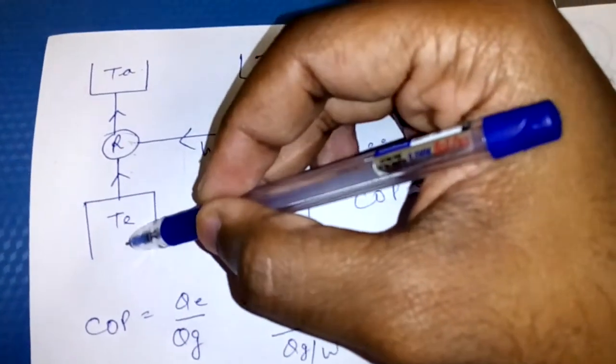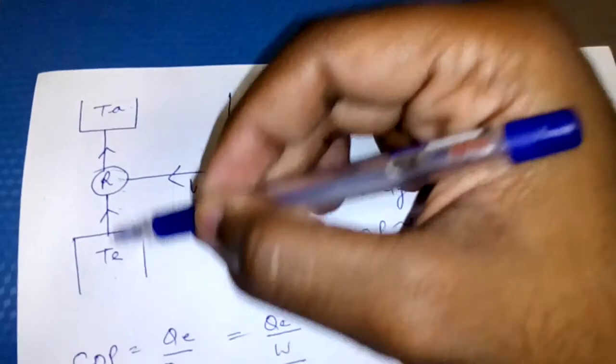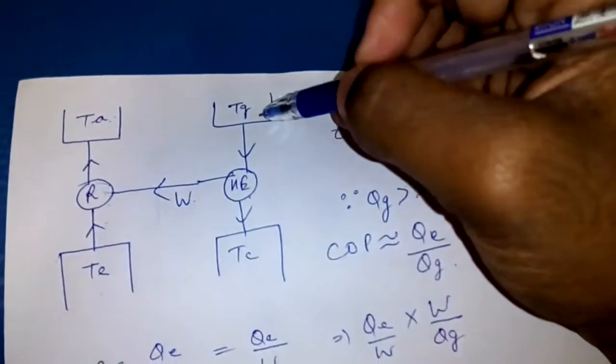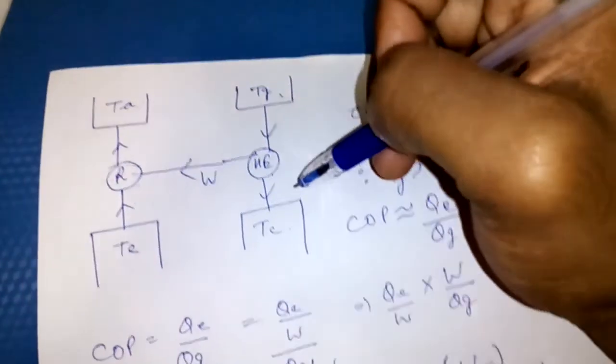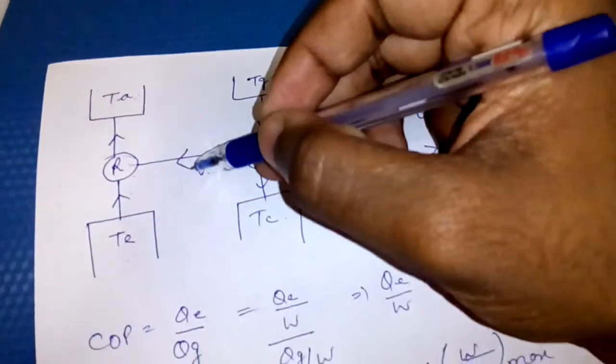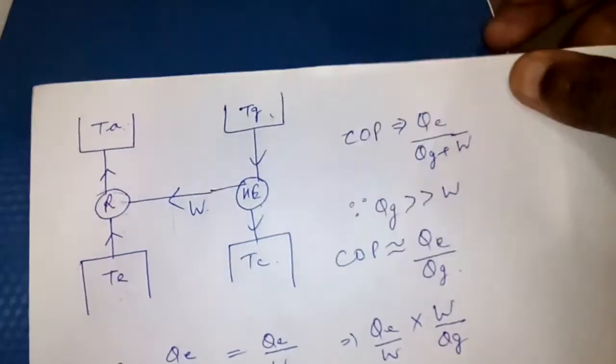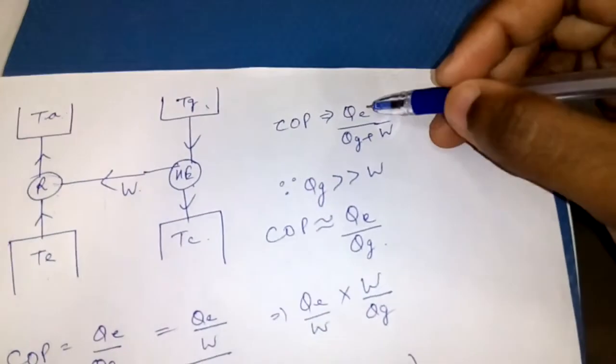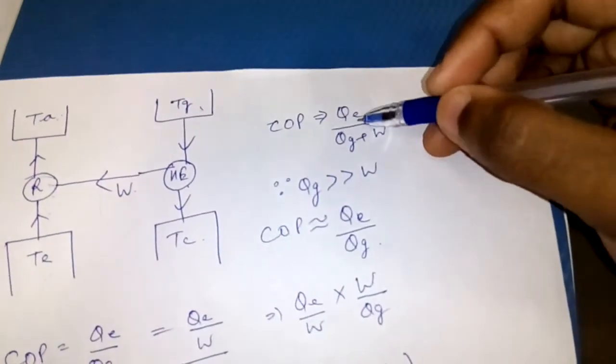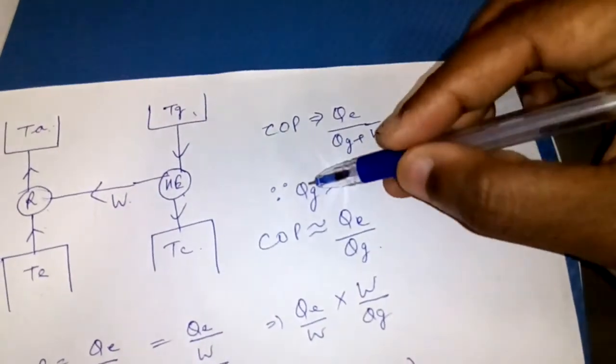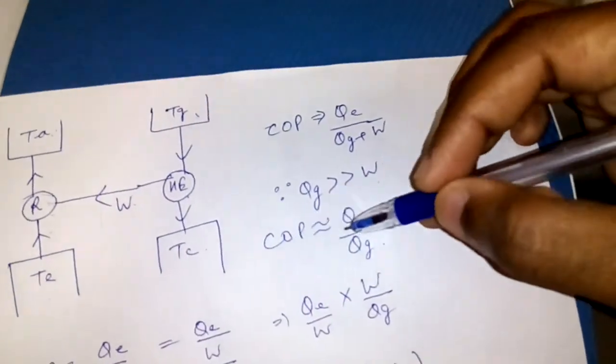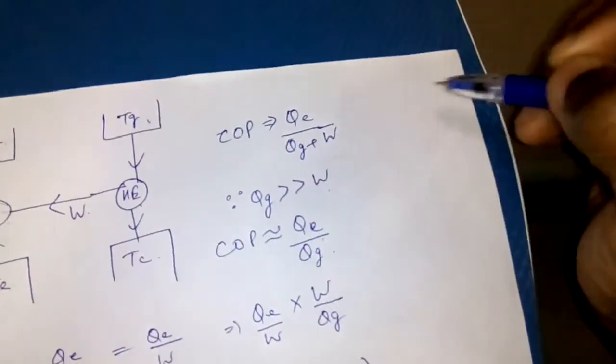This is TE corresponding to the temperature of evaporator, TA corresponding to the temperature of absorber, TG and TC corresponding to the temperature of generator and condenser respectively. This is the W, the pump work. Now since our COP was QE upon QG plus W, whereas QG is much larger than W, we can write COP nearly equal to QE upon QG.